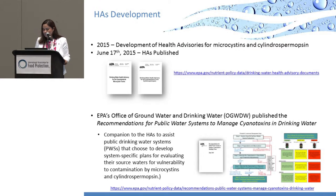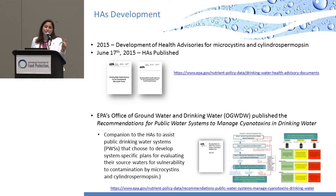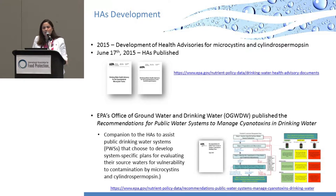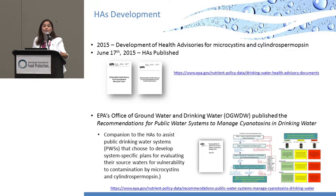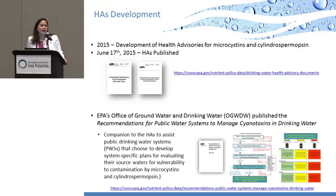We developed the health advisories in 2015, published in June 2015. The health advisory document describes health effects, how we reached our decision, available analytical methods, and treatment techniques for drinking water. EPA's Office of Groundwater and Drinking Water also developed a recommendations document called Recommendations for Public Water Systems to Manage Cyanotoxins in Drinking Water — a guide for water systems to develop their own plans for addressing cyanotoxins. It uses a red/yellow/green tiered process for dealing with toxins found in finished water and raw water.